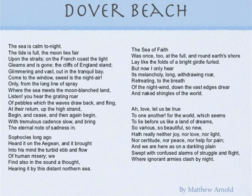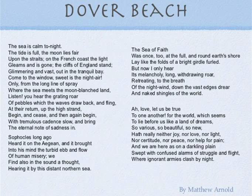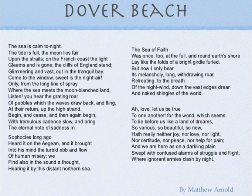The poem begins: 'The sea is calm tonight, the tide is full, the moon lies fair.' The sea here refers to the English Channel. The moonlight is reflected on the Gulf of Dover and it looks lovely — there is a complete moon, the tide is high, and the moon is getting reflected on the water. 'Upon the straits' refers to the gulf between Dover and Calais. The light gleams faintly on the French coast and is gone.